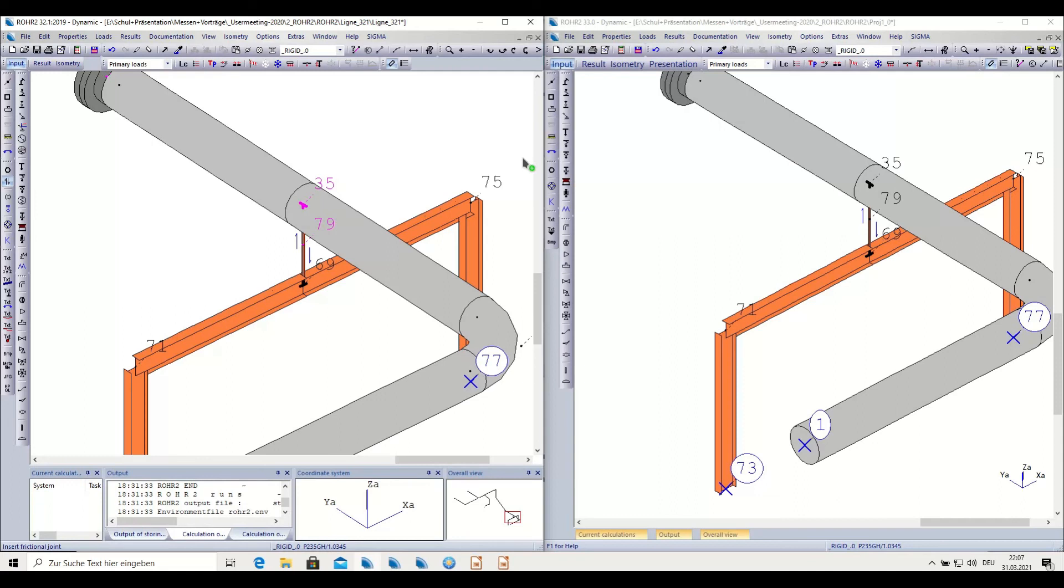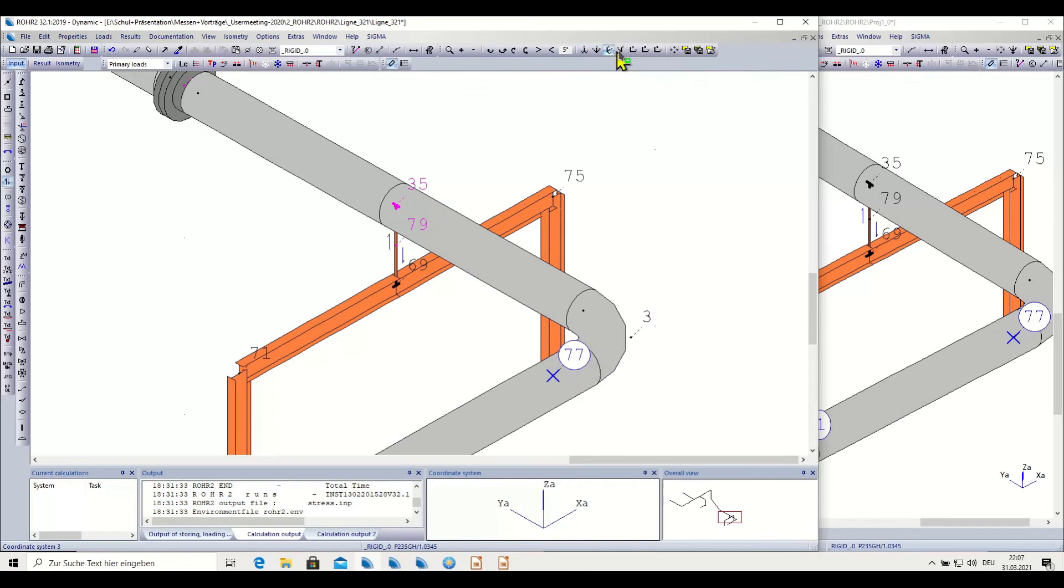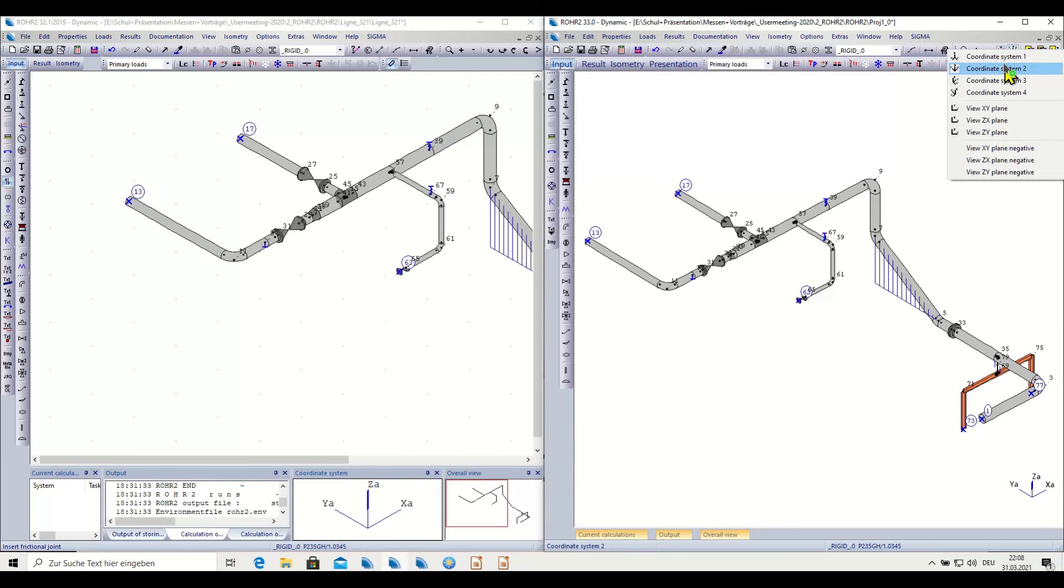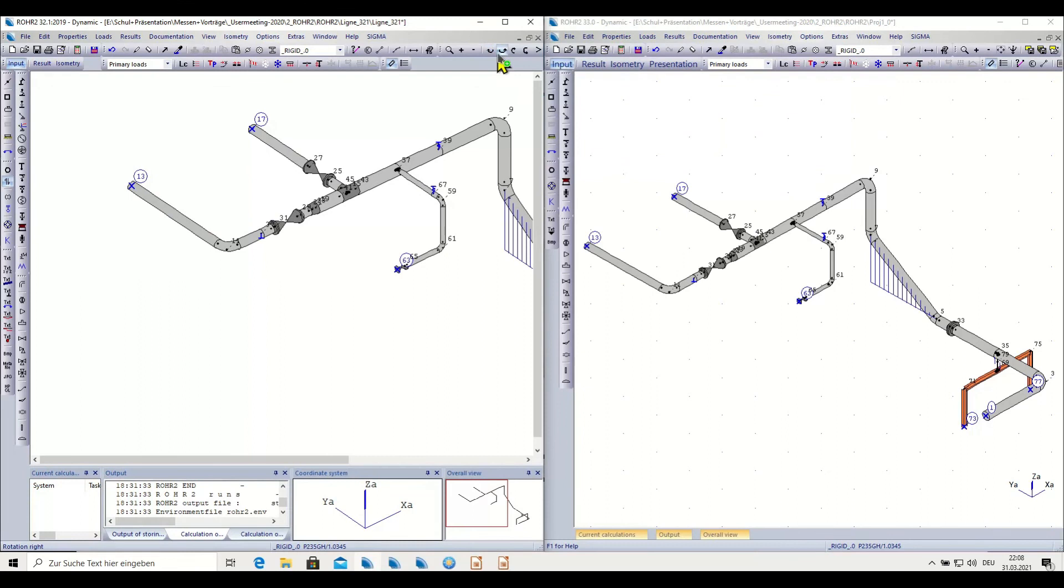In order to show this on the split screen view, I have to open up the old version because it takes too many icons here. So you can see all the different coordinate systems which you can bring up here from the different views. And the same functionality in the new version can be seen here. You just select the different coordinate systems from the drop-down icon bar here. The old rotate functions can now be just done with the mouse.